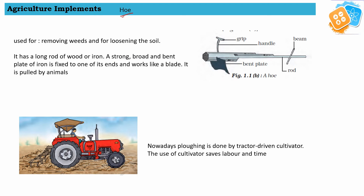Our second tool is hoe. It is used for removing weeds and loosening up the soil. As we can see in the figure, a strong broad and bent plate of iron is fixed to a long rod of wood or iron, and it works like a blade. It is pulled by the animal, weeds get removed, and it also loosens the soil.